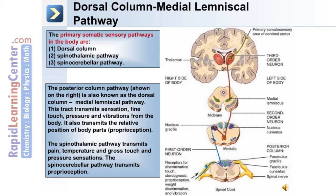The spinal cerebellar pathway transmits proprioception. As you can see in the image on the right, sensory information comes in through the first-order neuron, then it's passed to the second-order neuron, and ends up in the third-order neuron within the brain.